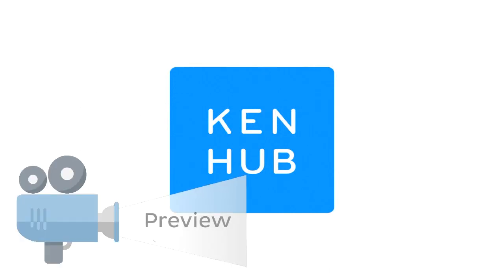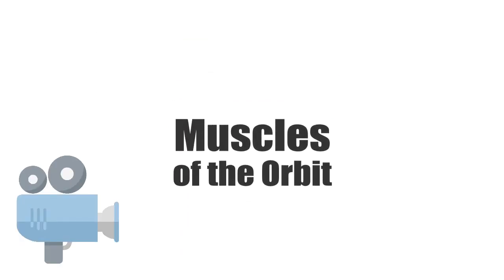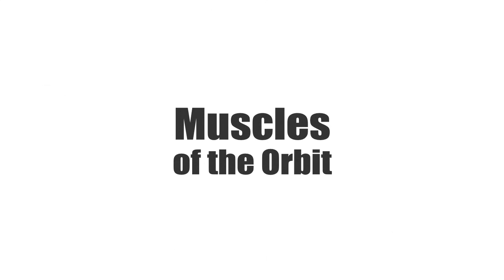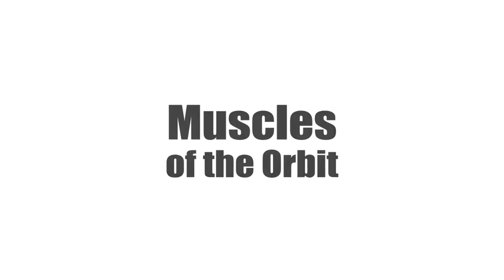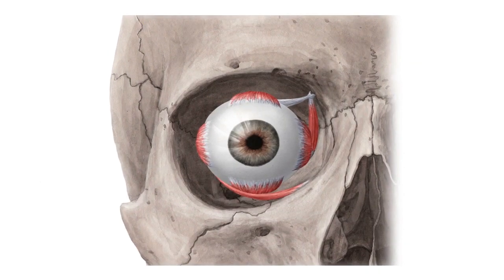Hello everyone, this is Juan from KenHub and welcome to another anatomy tutorial. Today we're going to be talking about the muscles of the orbit. In this tutorial we will take a look at the muscles and related structures of the orbit, focusing on the muscles that control the movement of the eye and their related structures.